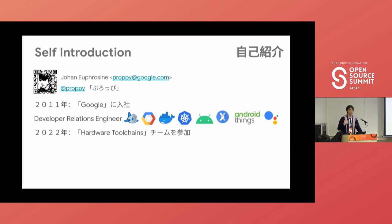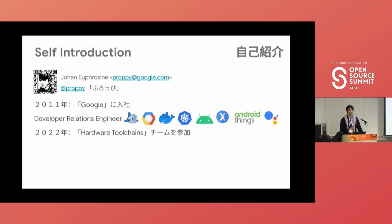My name is Johan. I go online by Propy. I've been at Google for 10 years and I'm a developer relations engineer, working mostly on developer-facing products and trying to make the experience better for external developers. Recently I joined the hardware toolchain team, focusing on enabling people to do custom silicon.